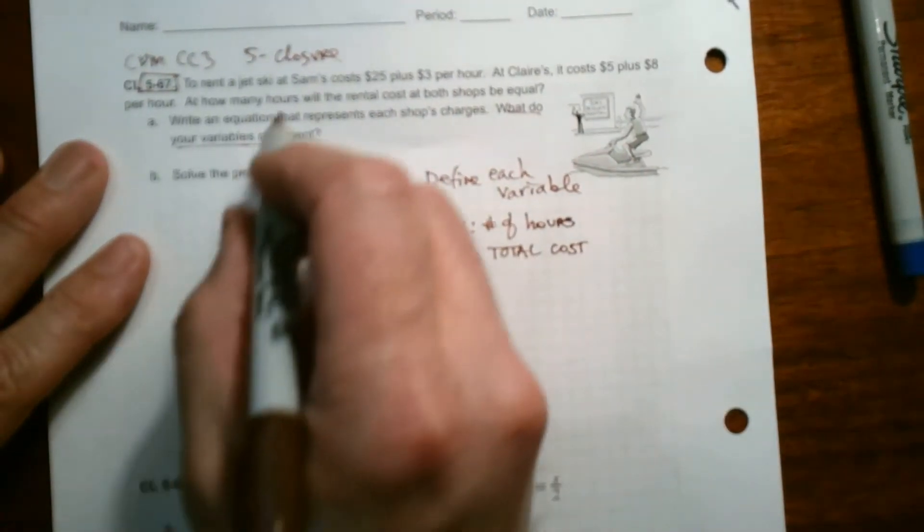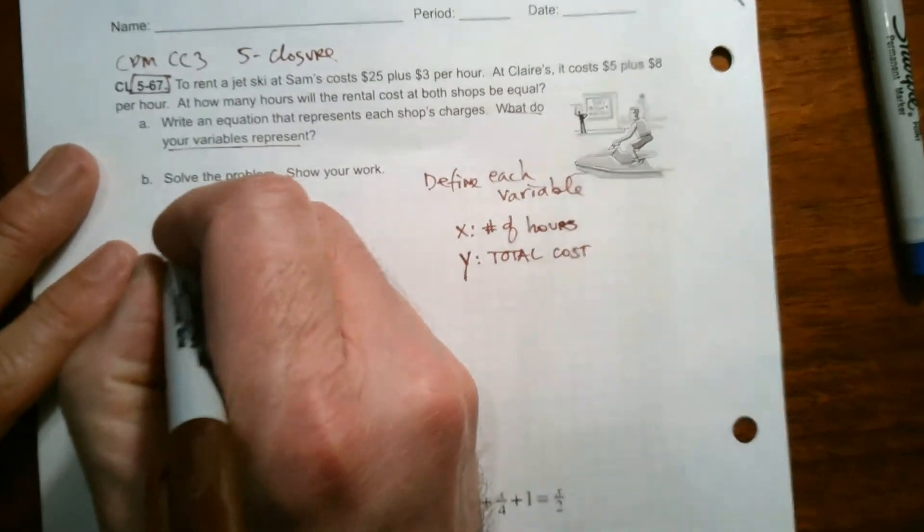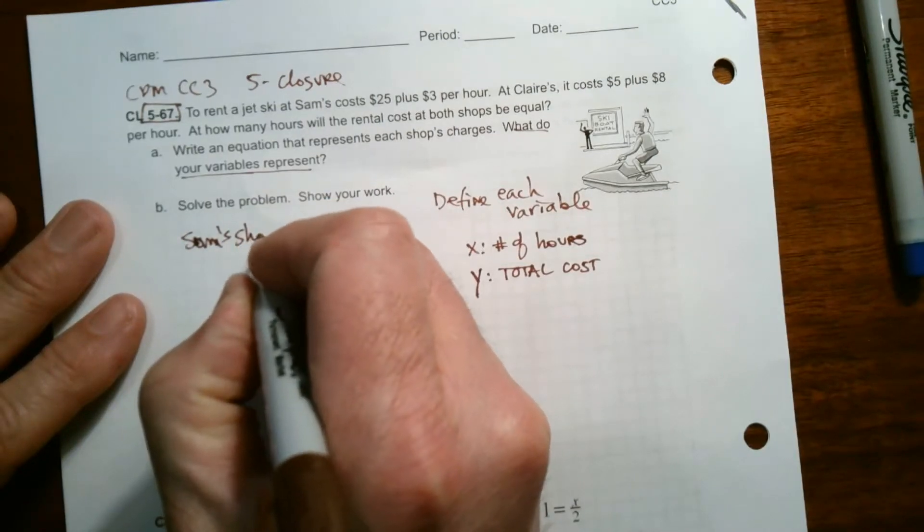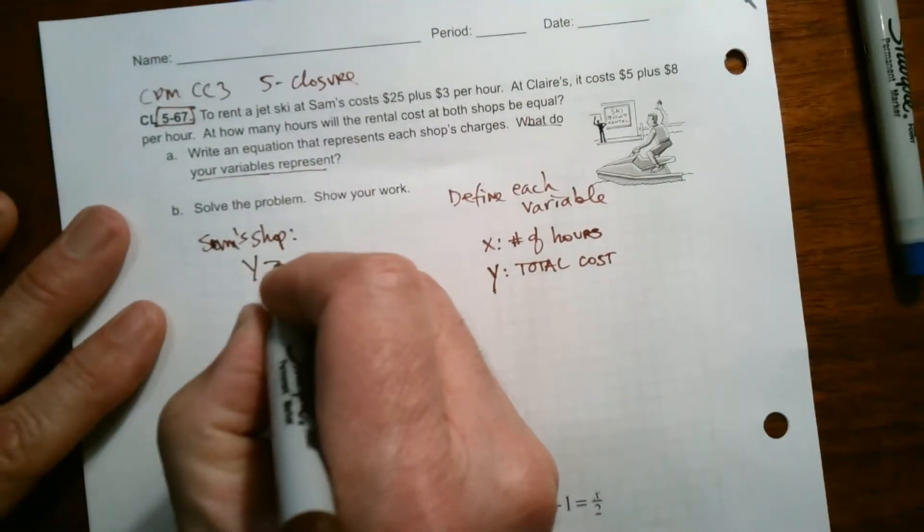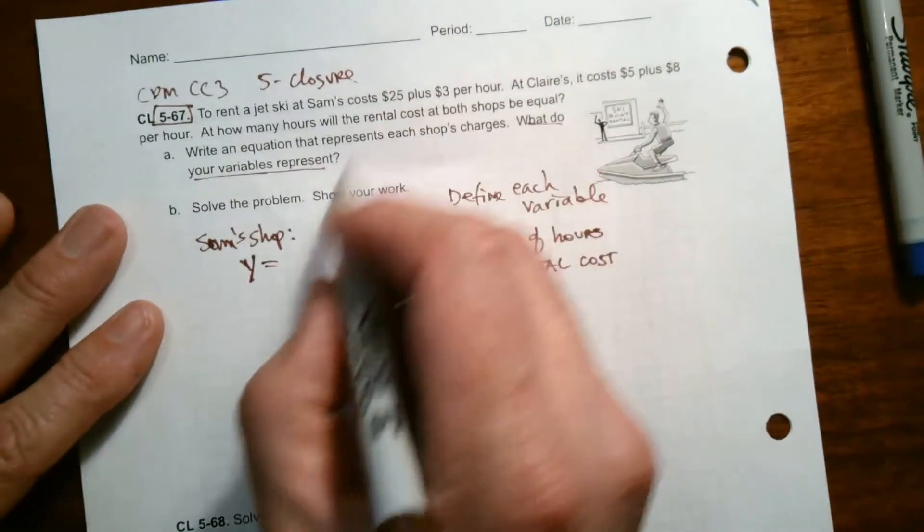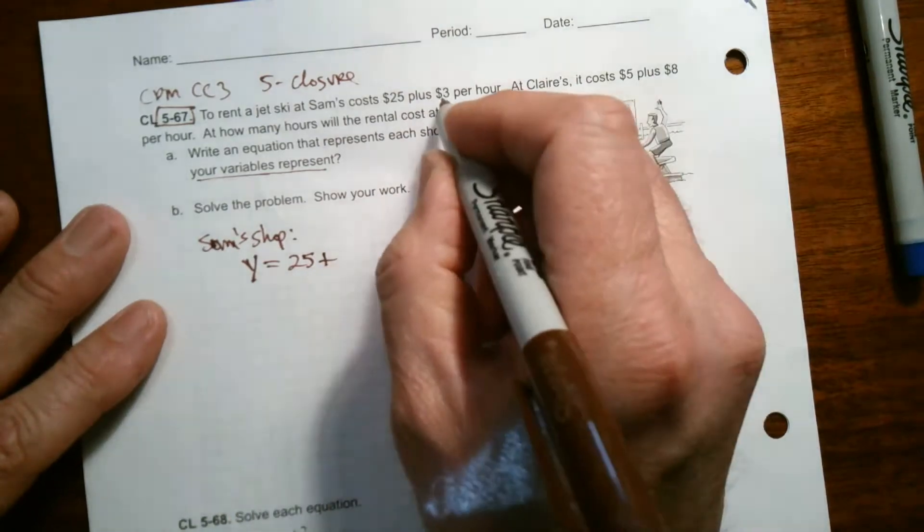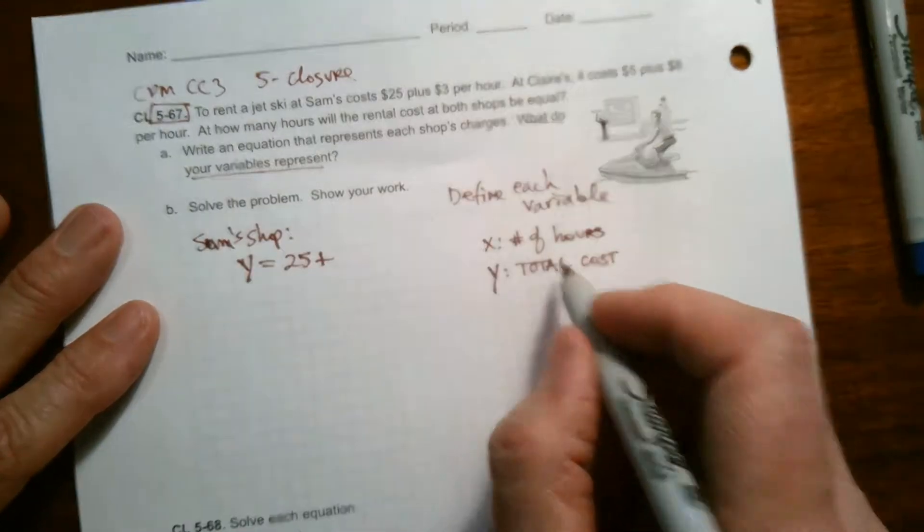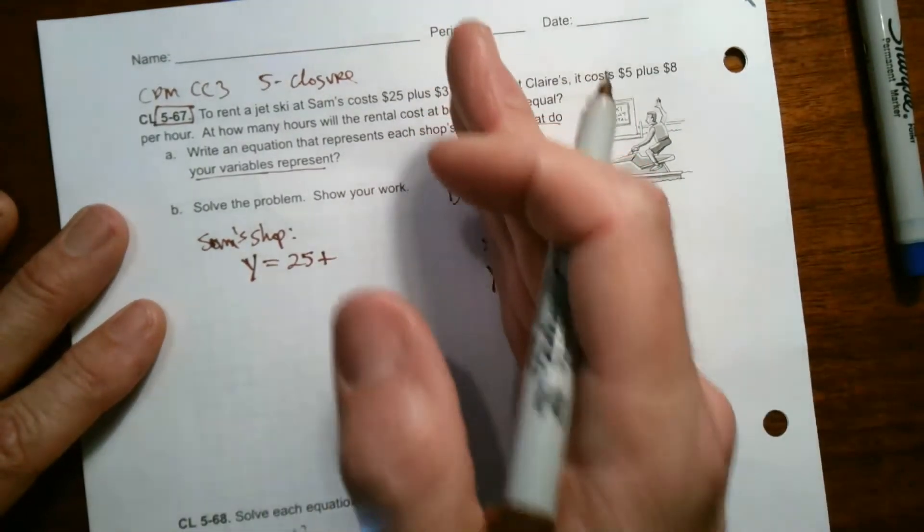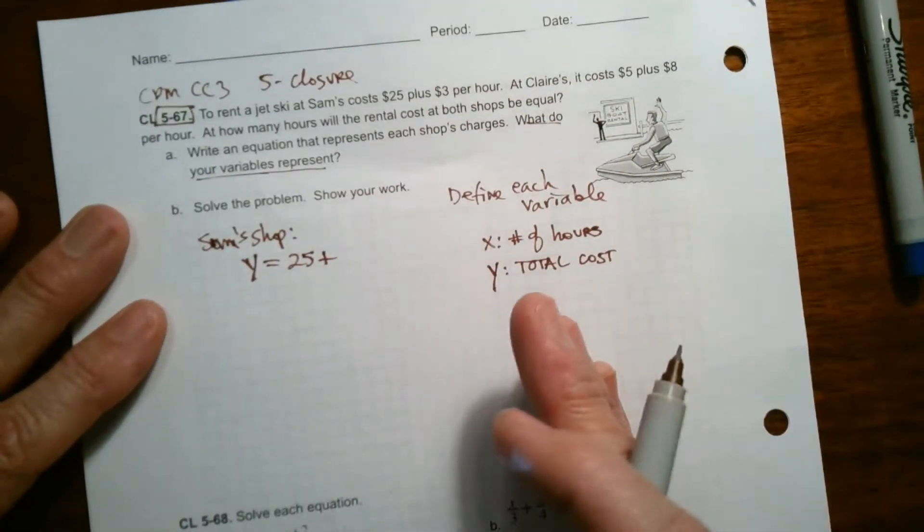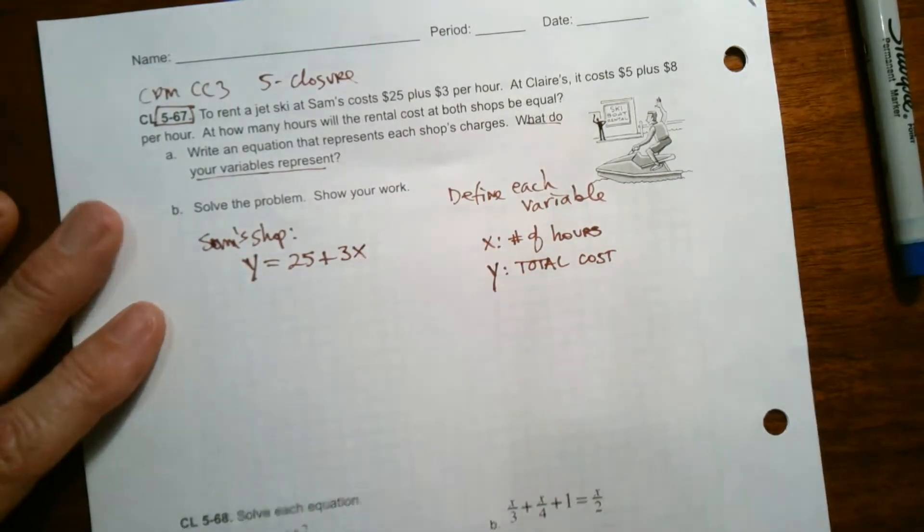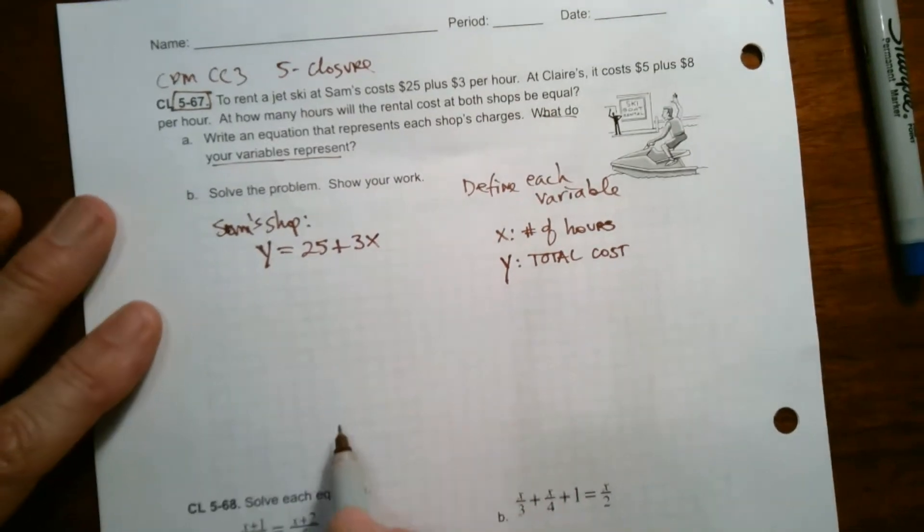Okay. So if I'm going to write an equation for Sam's shop, what would be my equation? Well, I'd say Y equals, Sam's total cost is $25 plus $3 per hour. So when you say per hour, you're saying $3 each hour. So if it was 10 hours, I'd go three times 10. If it was five hours, it'd be three times five. So we write it with multiplication, three X, three times X. So there's my equation for Sam's shop.